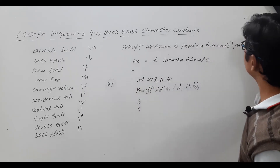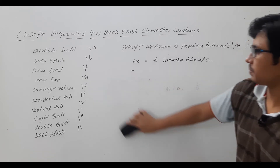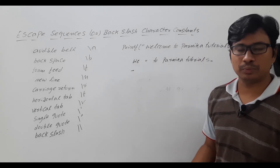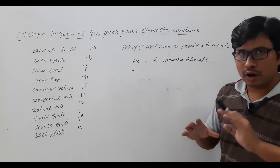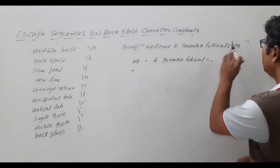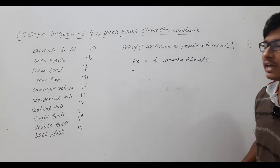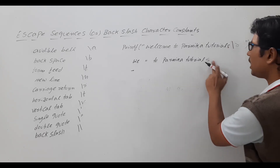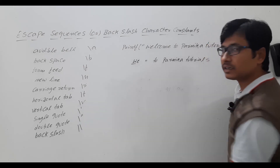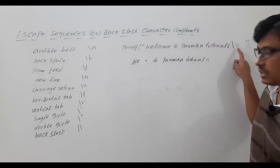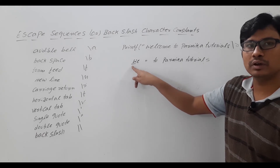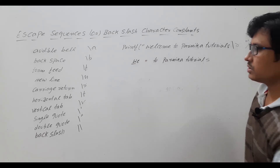Now let me discuss backslash R, which is carriage return. I request everyone to please try executing these examples in your computer to see the outputs. If you write backslash R, it will print 'welcome to Parnika Tutorials' and the cursor will point back to the first character. Without backslash R, the cursor points after the last character; with backslash R, it moves to the very beginning.